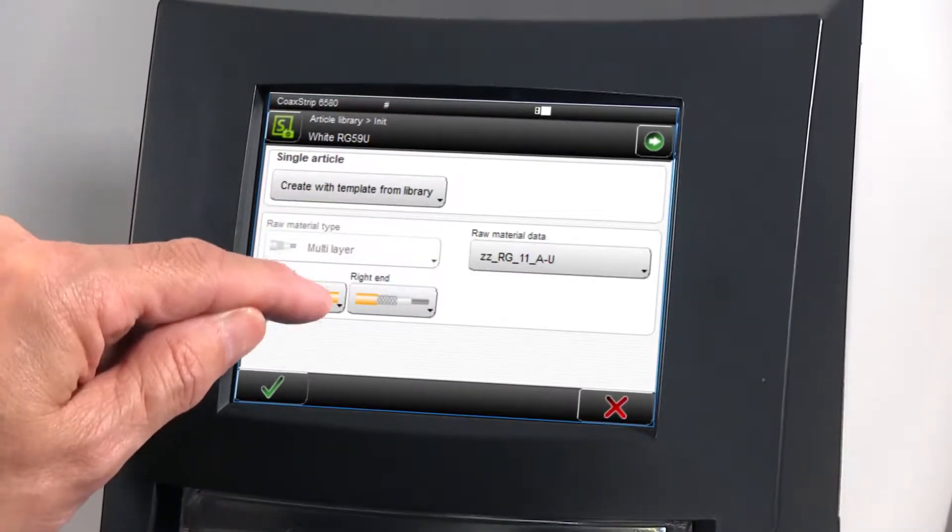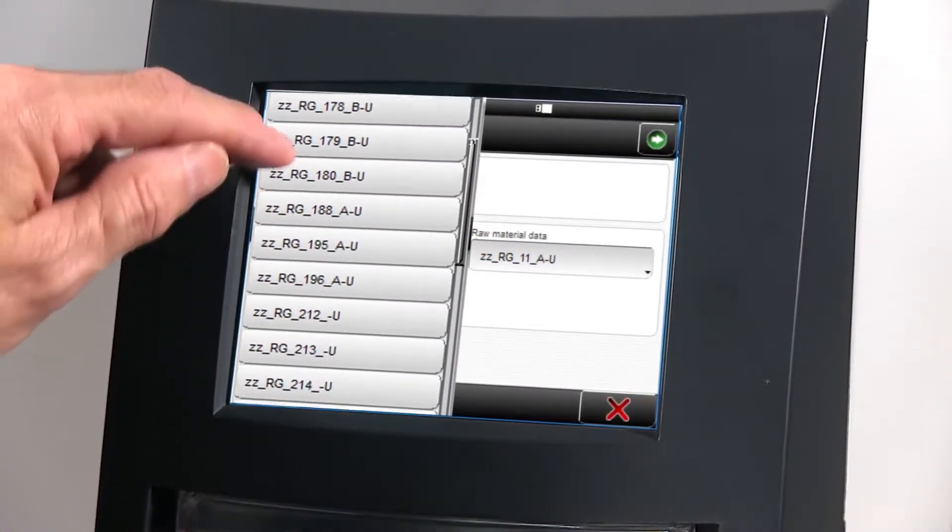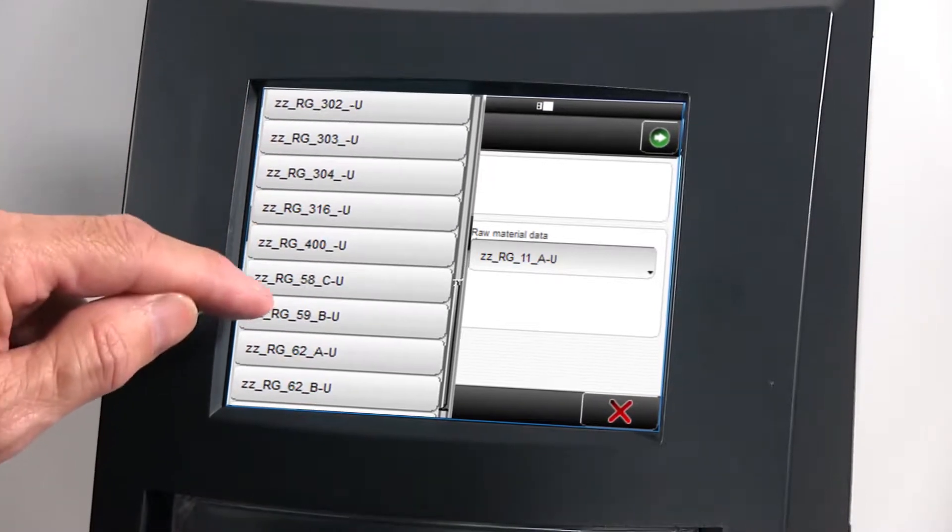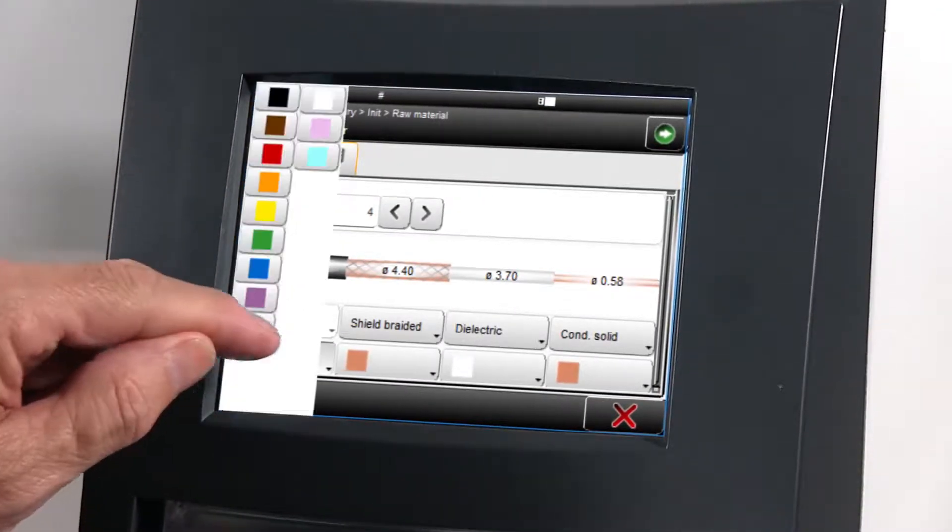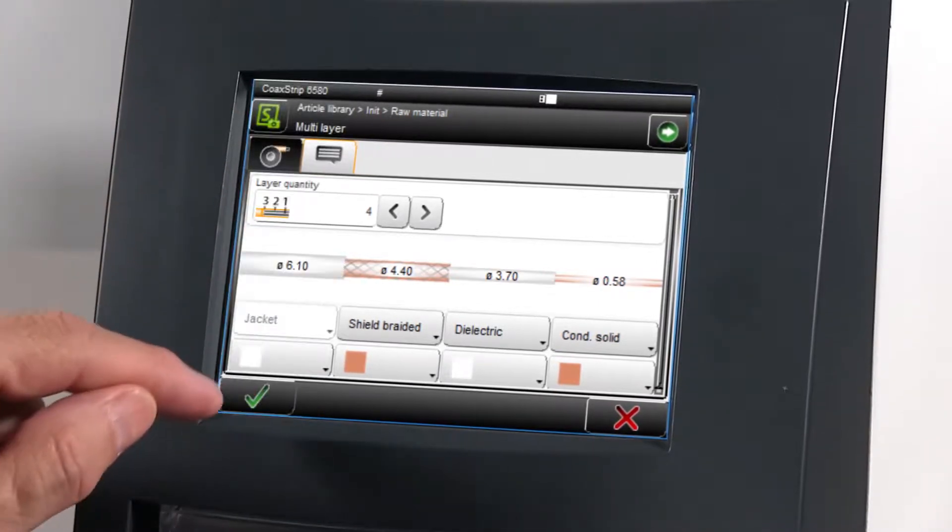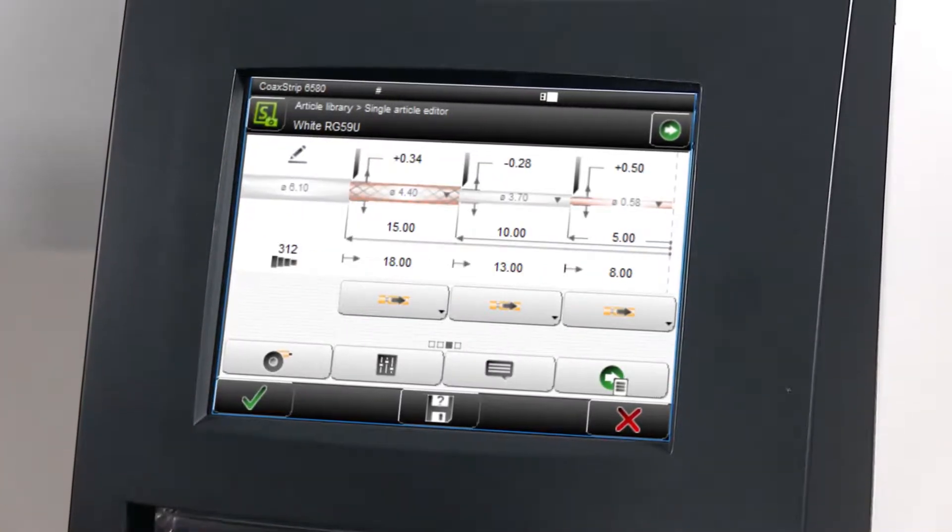Utilizing Schleuniger's highly successful programming platform, S-On, newly implemented functionality enables optimum processing on a diversity of wires and cables covering a wide range of applications.